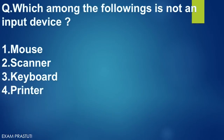Which is not an input device? Select option 4 — Printer. A printer is an output device, while mouse, scanner, and keyboard are input devices.